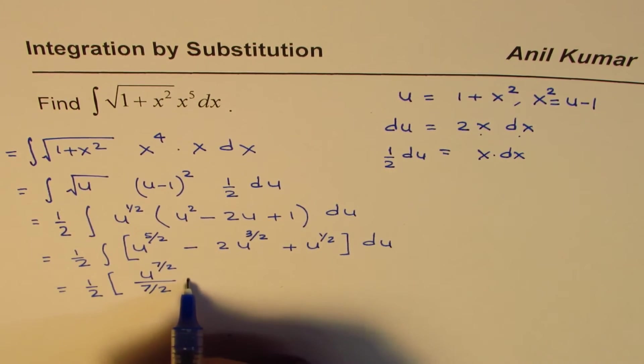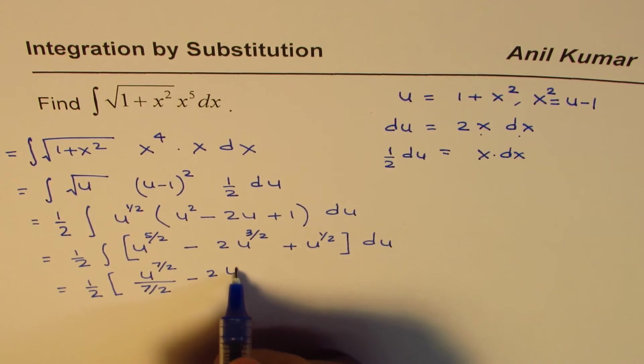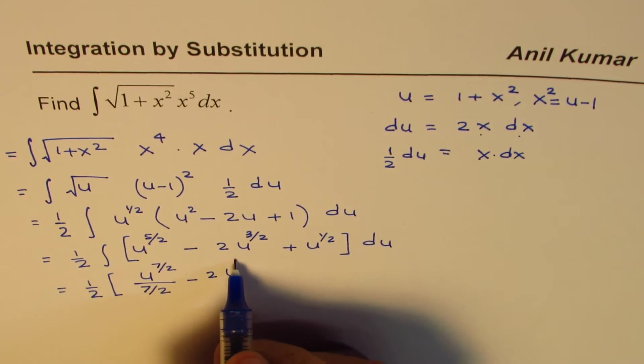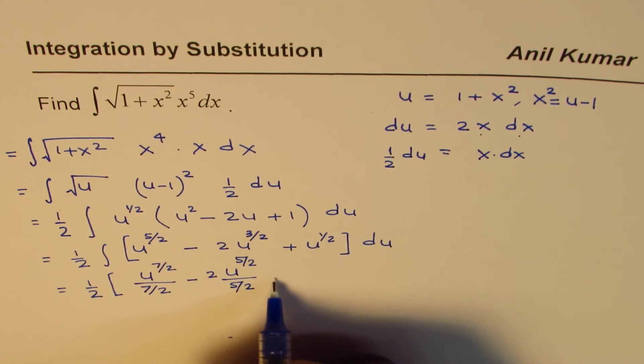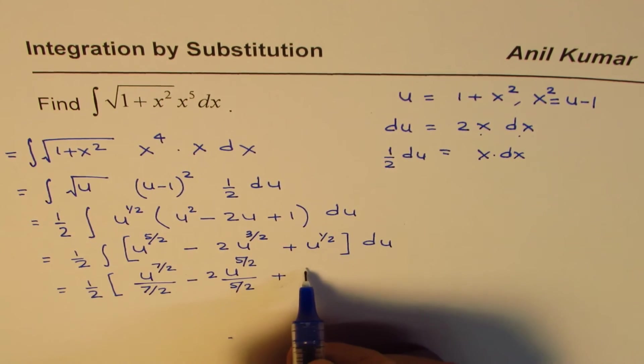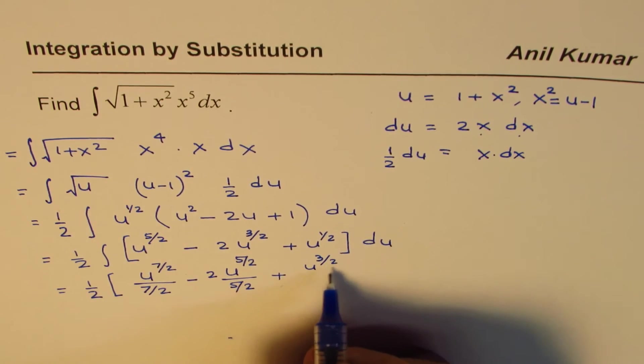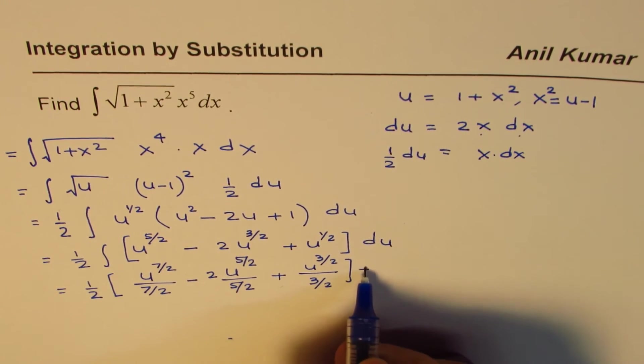Minus 2 times u to the power of—add 1 to the exponent—5/2 over 5/2, plus add 1, 3/2, and then add a constant.